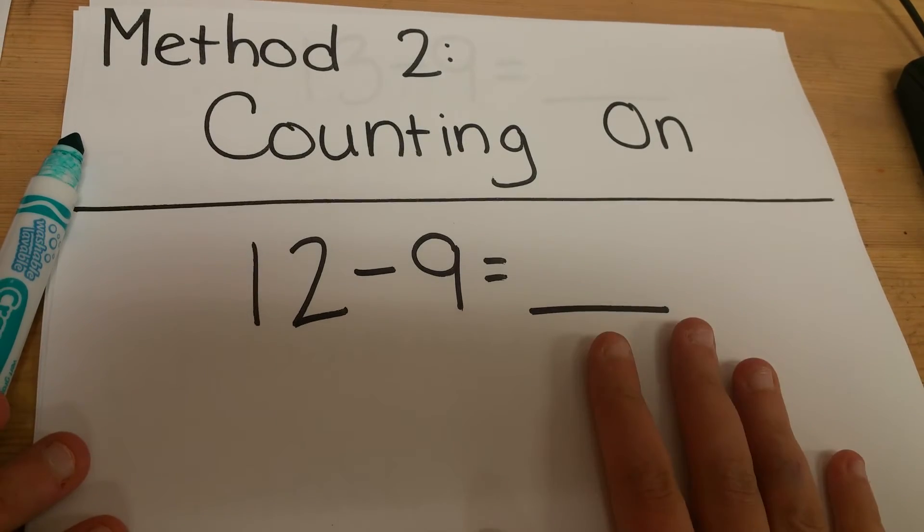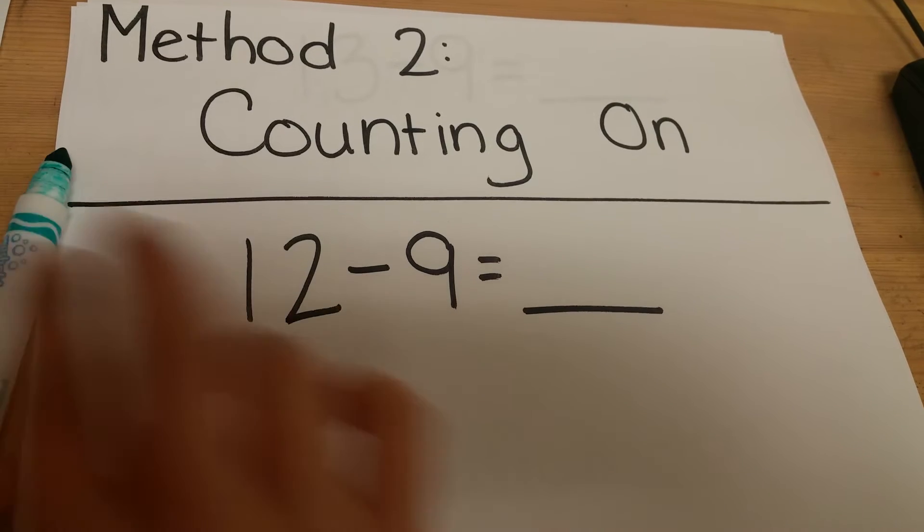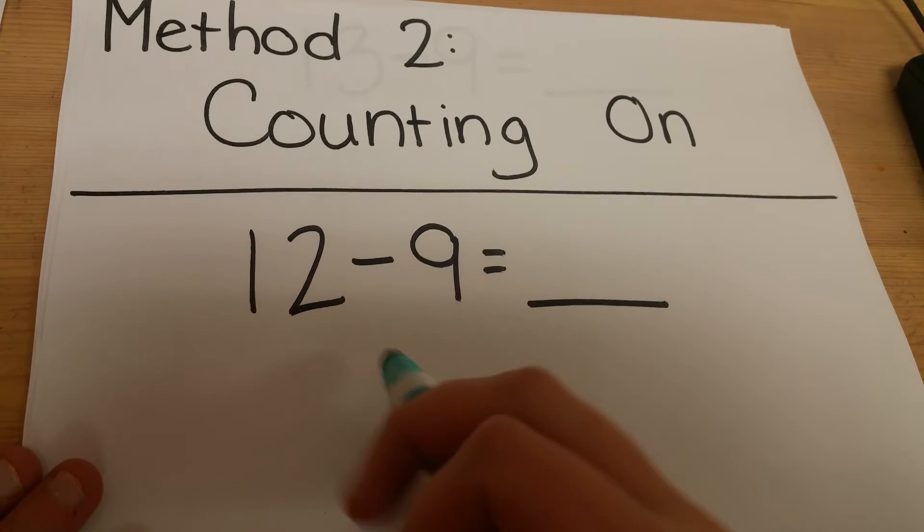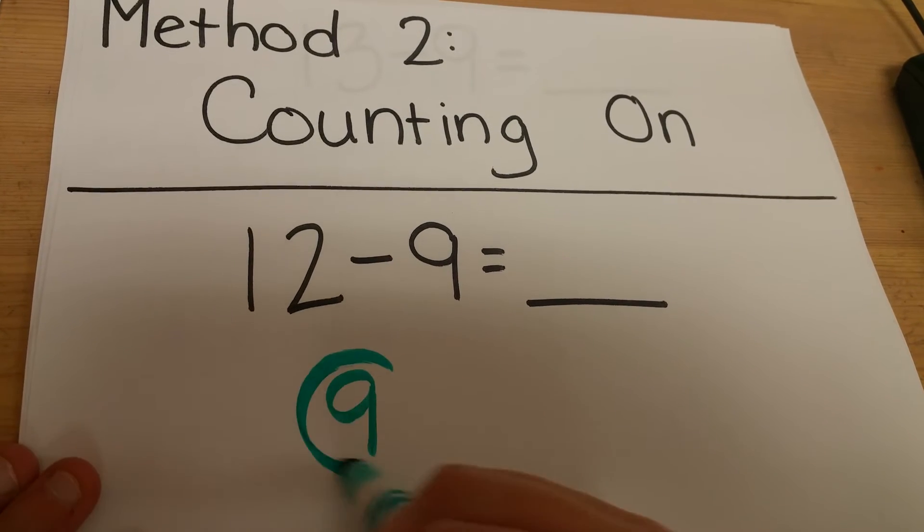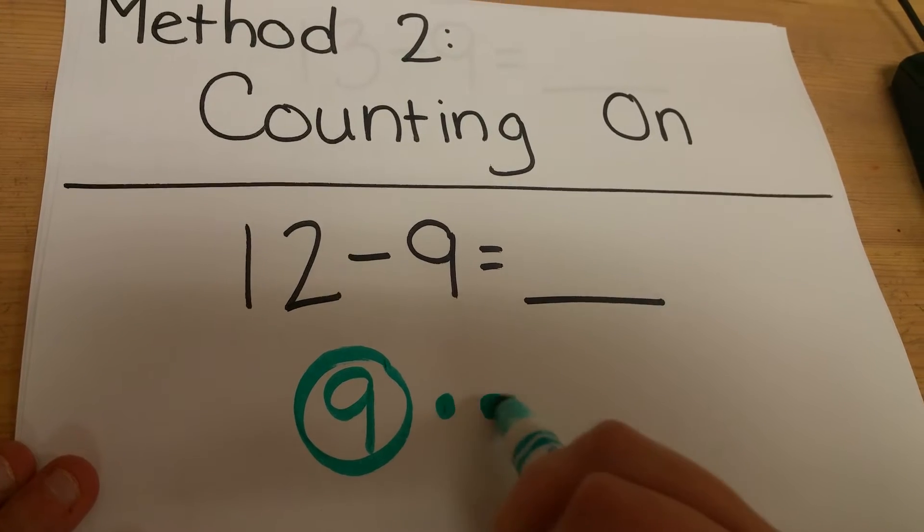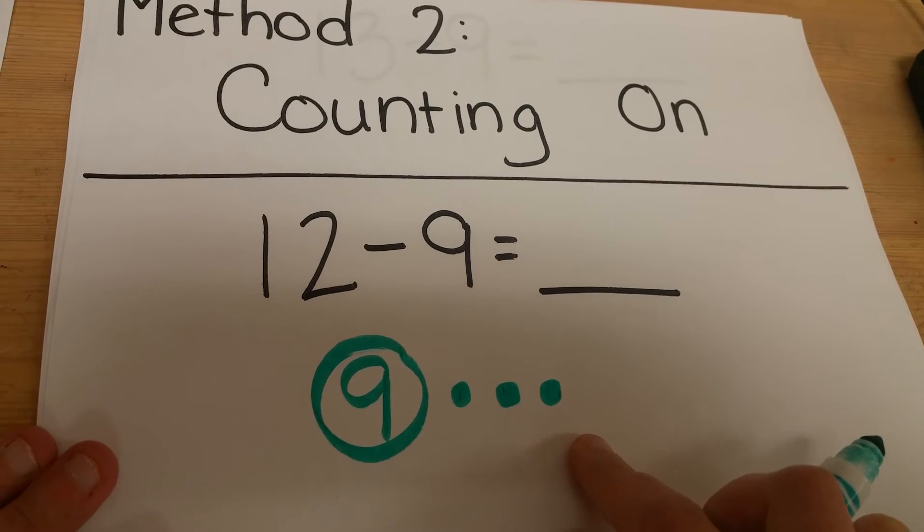But because they're writing on their paper we need to see proof of what they're doing. So instead of doing it with their fingers they'll write 9, 10, 11, 12. The answer is 3.